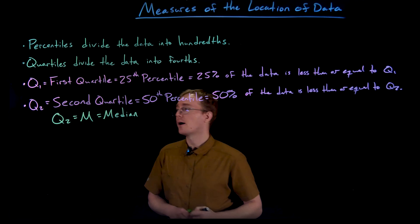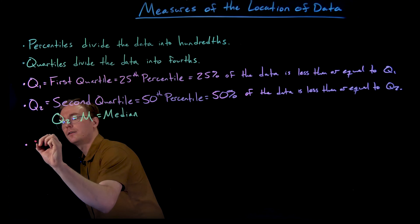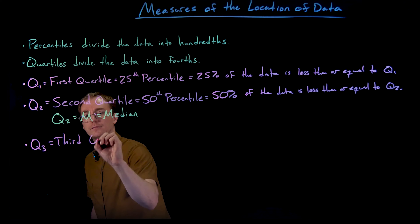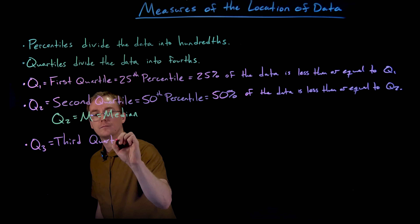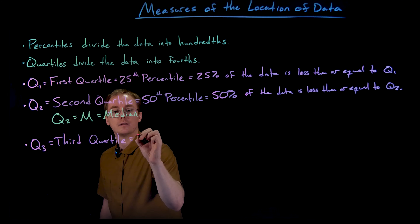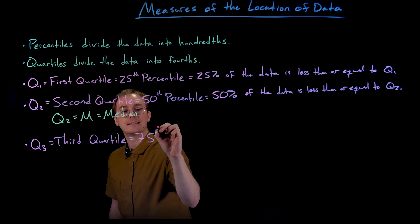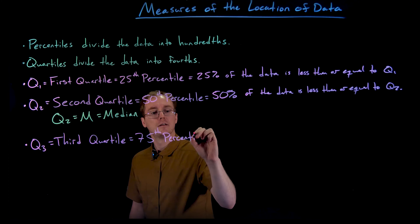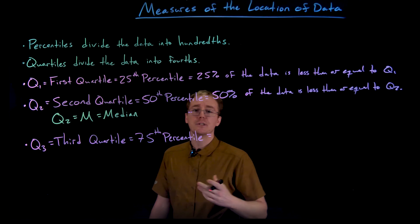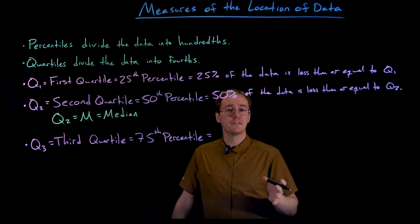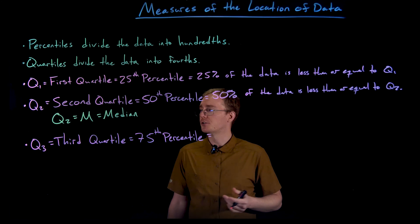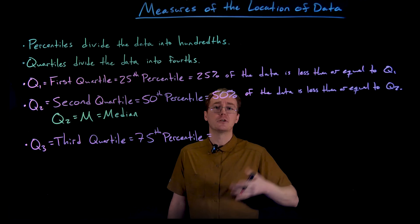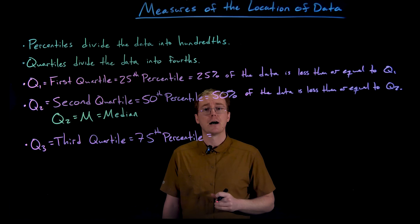The third quartile, denoted Q sub three, is like the 75th percentile. We know that 75% of the data values are going to be less than or equal to the Q3 value, and equivalently, 25% of the data is going to be greater than this Q3 value.